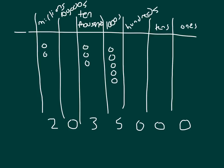The other thing we're going to work on is the placement of commas. If I write out this number: two, zero, three, five, zero, zero, zero — let's place our commas so it's easier to see and read. We count from right to left three places — ones, tens, hundreds — and place a comma there. Then three more places and place another comma. So this number is read as two million thirty-five thousand.